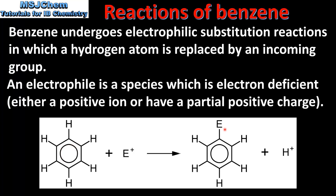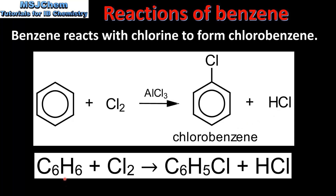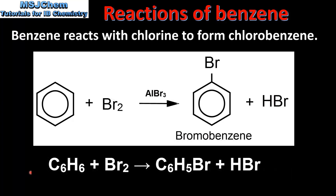In the products we can see that the electrophile has replaced a hydrogen atom in the benzene molecule. Benzene reacts with chlorine to produce chlorobenzene. Here we have the reaction of benzene with chlorine in the presence of aluminium chloride to produce chlorobenzene and hydrogen chloride. Benzene can also react with bromine to produce bromobenzene and hydrogen bromide.